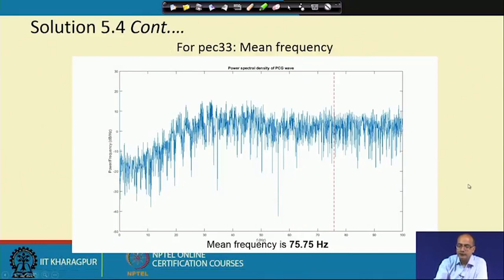If we compute the mean frequency for PEC33, we get the mean frequency at a little higher frequency, 75.75 hertz. It is a little higher than the previous case, which was around 50 hertz.